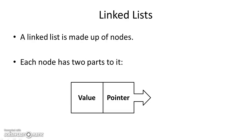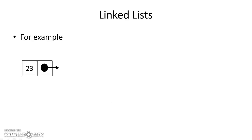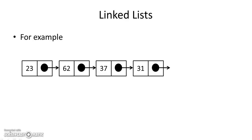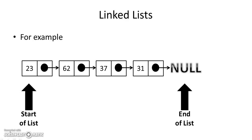A linked list is made up of nodes. Each node has two parts: a value and a pointer. The value is like a value in an array — think of an array of eight elements, each element is a value. But a linked list also has a pointer which points to the next node. For example: a value of 23 with a pointer to 62, then to 37, then to 31.